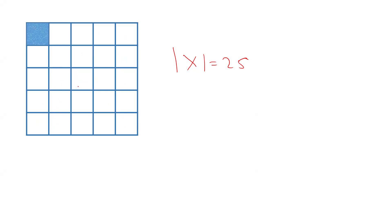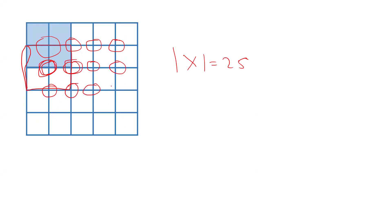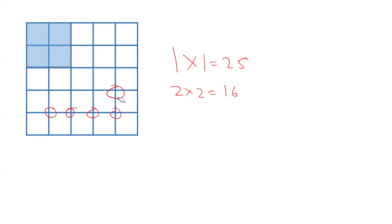1 by 1 squares are 25. Now there are 2 by 2 squares. Counting them: 1, 2, 3, 4, 5, 6, 7, 8, 9, 10, 11, 12, 13, 14, 15, 16. So the number of squares of 2 by 2 is 16. When we join 4 squares together to form a 2 by 2 square, this is one of those squares and there are 16 such squares.